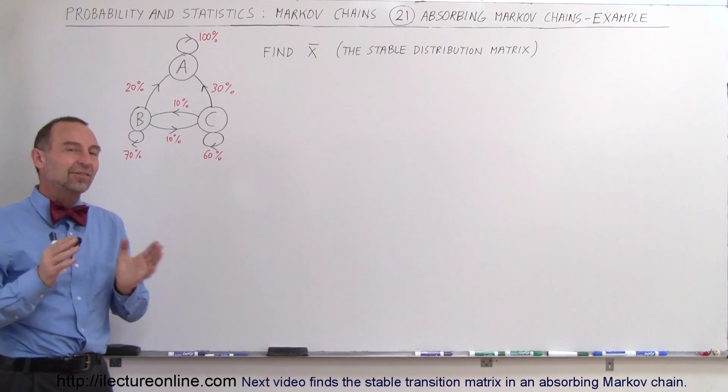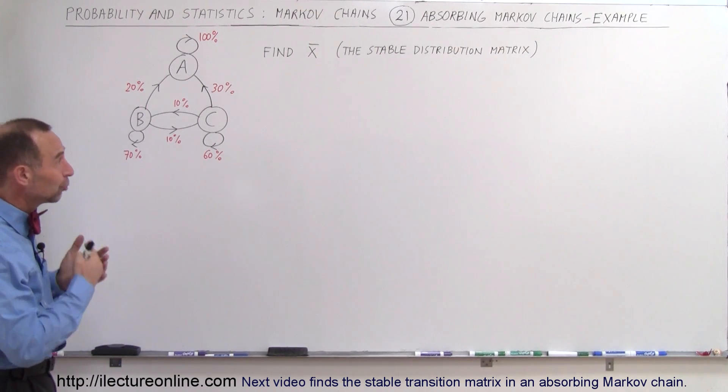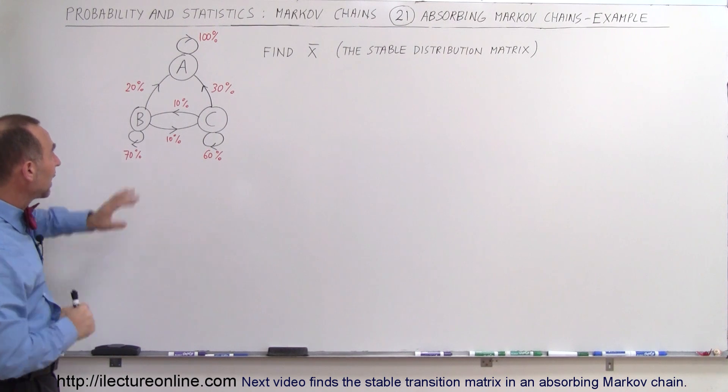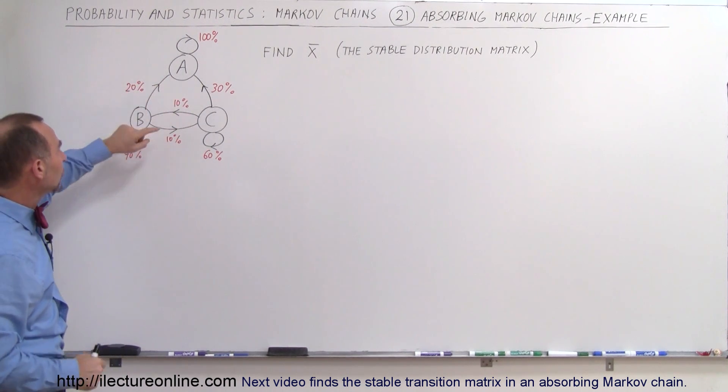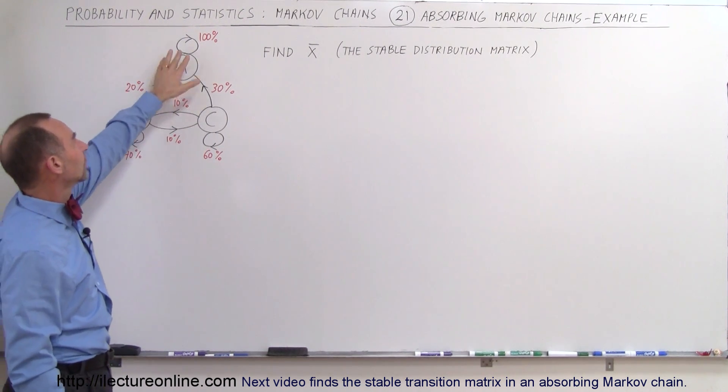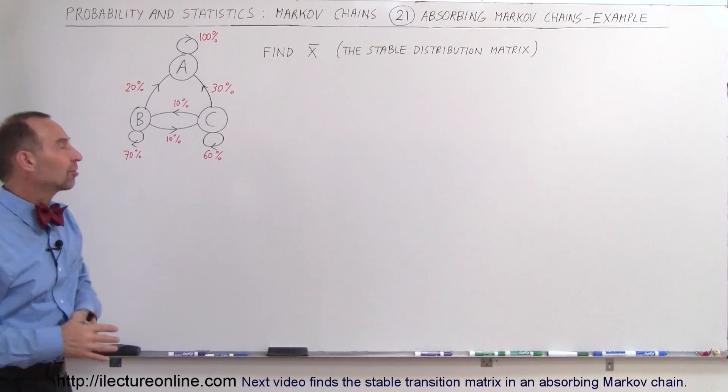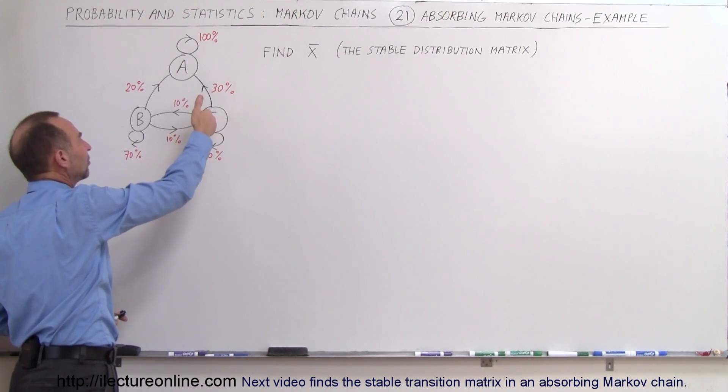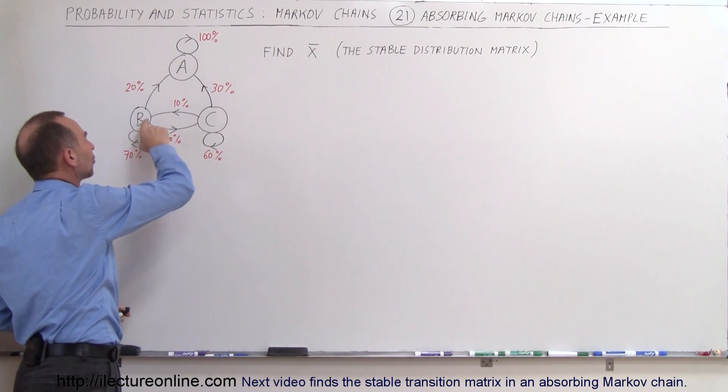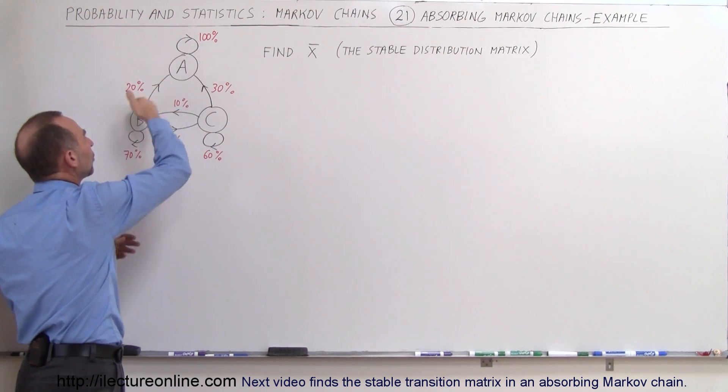Welcome to ElectronLine, and here we have an example of an absorbing Markov chain. Here we have three stores. Store A will contain or keep all of its customers. There's no customers going back to B or C once they've gone to A, and there's customers from B and C that will always go to A.